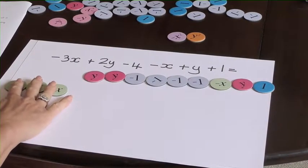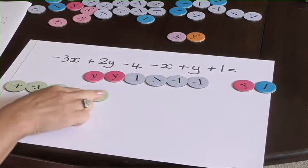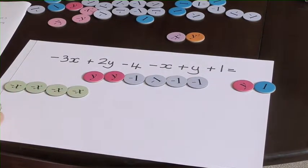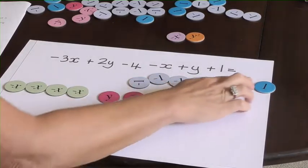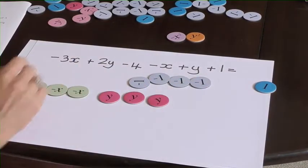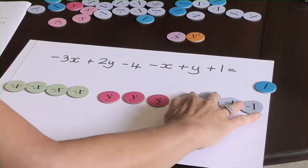I think that'll be easier for me to see what's happening. I've got the negative x's together, I've got the y's together, and I've got all the 1's together.